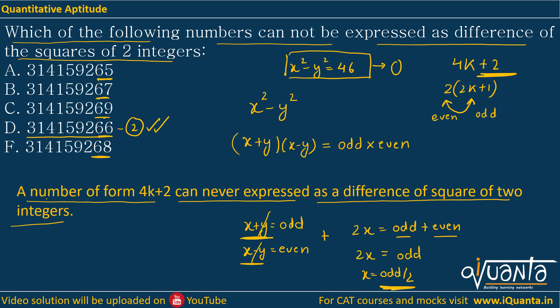So that means there is only one such option. This number, option D, is of form 4k+2. So this particular number cannot be expressed as a difference of square of 2 integers. Option D will be the correct answer to this question. Whenever you come across such a question, this rule should click in your mind and you will be able to solve that question in around 10 seconds. I hope the concept is clear. If there is any doubt, please comment. Thank you.